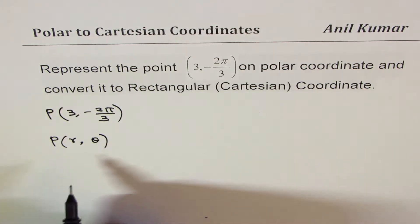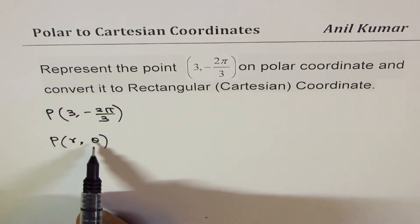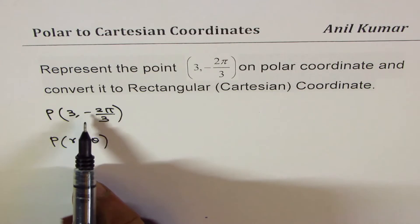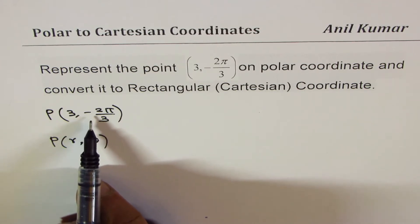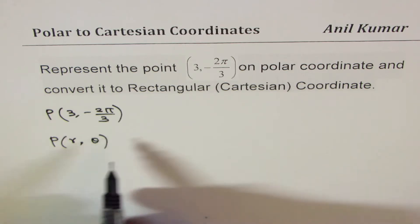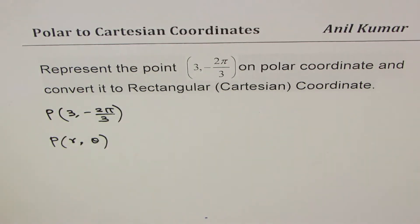In polar coordinates, we normally refer to points with R and theta, where R is the magnitude and theta is the positive angle made counterclockwise. If it is negative, that means we are moving from the positive x-axis, which is the initial arm.